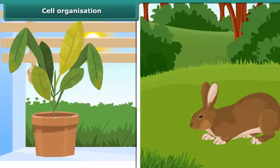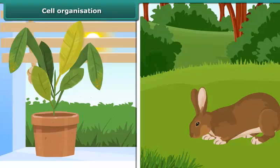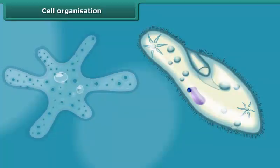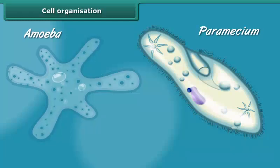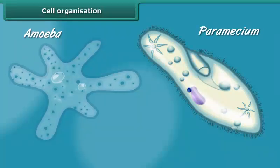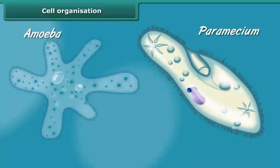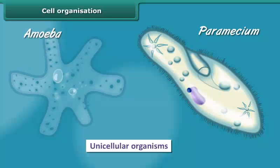They may be unicellular or multicellular depending on the number of cells in their body. Small size organisms like amoeba and paramecium are made up of one cell. They are called unicellular organisms.